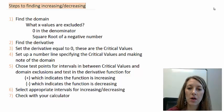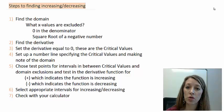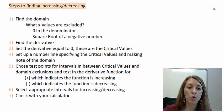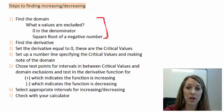The very first thing we want to do is, given the function, we want to find the domain. That means we are going to figure out which x values are excluded from the domain. Typically, we focus on two things: where the denominator is equal to zero, and where we have a square root of a negative number. We want to worry about this first, because if it is excluded from the domain, we don't have to worry about it in the rest of the graph.